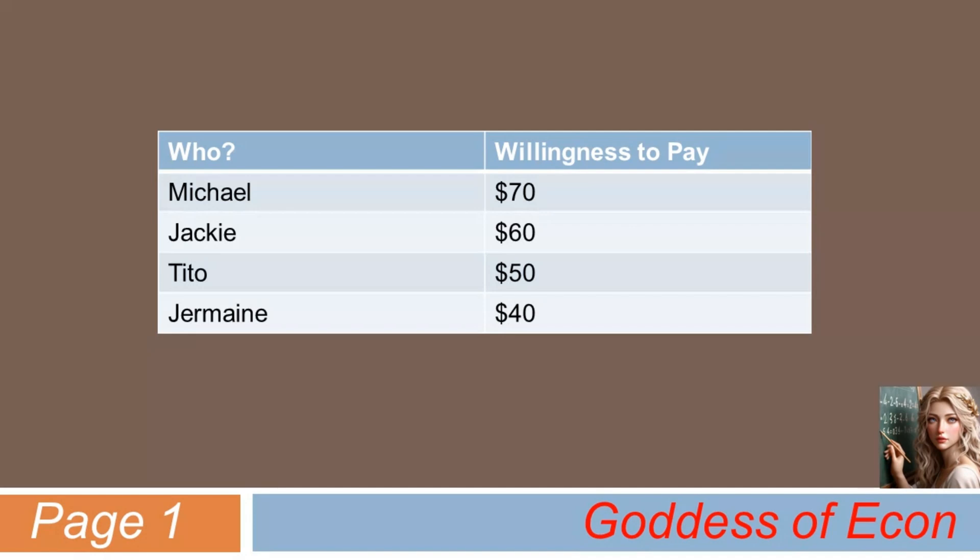Let's further assume that each of the four buyers likes the item, but they have different levels of willingness to pay. For example, Michael is willing to spend as much as $70 on the item, whereas Jermaine is only willing to spend $40 at the maximum to purchase the same item. So this means each individual's maximum willingness to pay differs as depicted in the table.